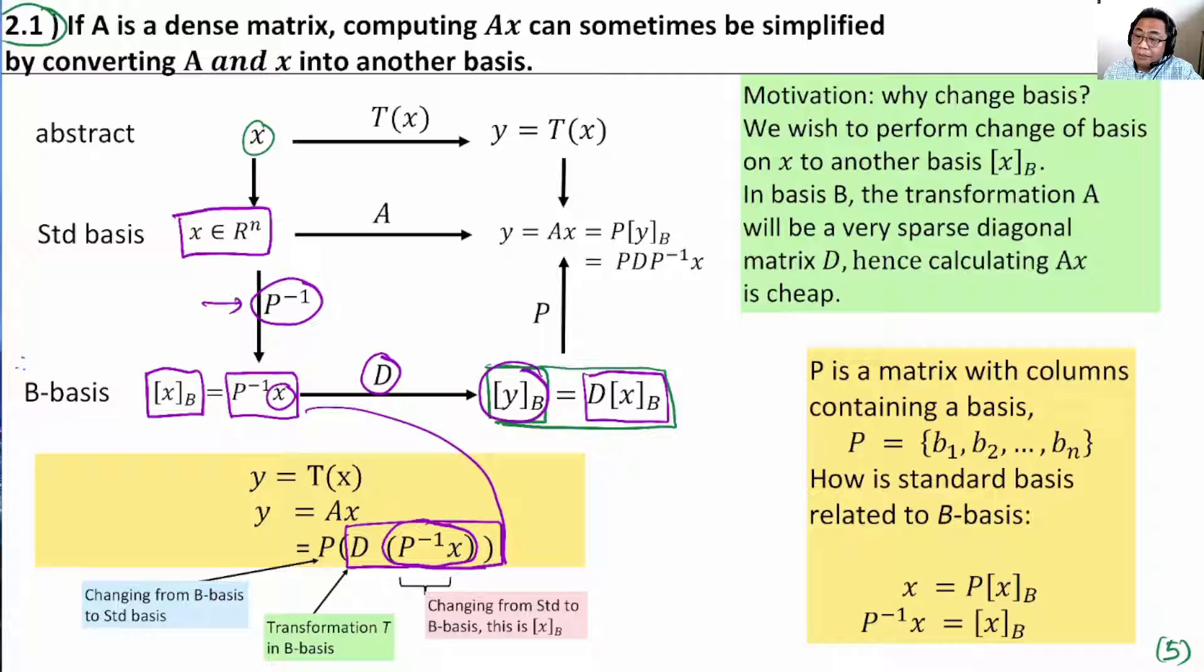And because most of the time, we want the output to be in the standard basis, to convert a B basis to a standard basis, we pre-multiply on the left by P. So, we get P, which changes from B basis to the standard basis, multiplied by D, which is the operation of A in the B basis. P^(-1)X converts X from the standard basis to the B basis.